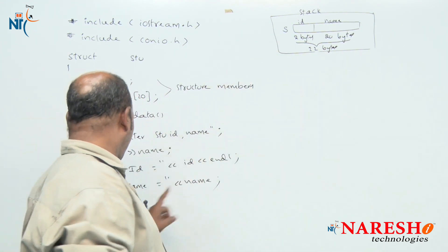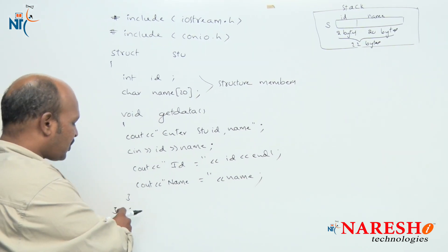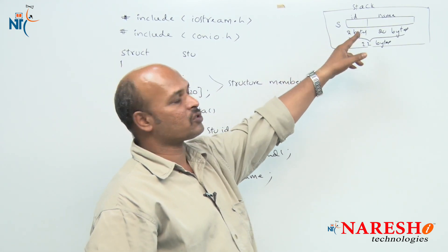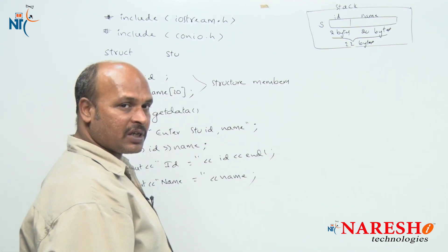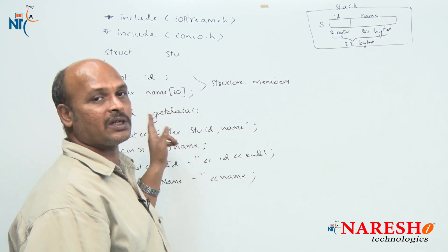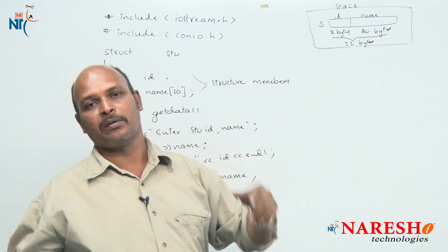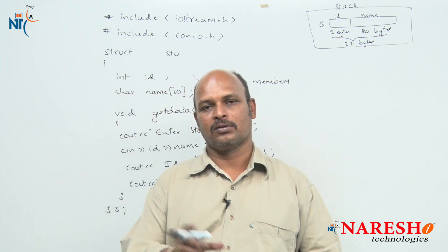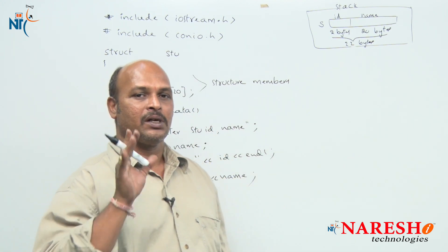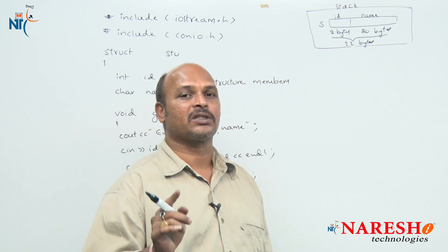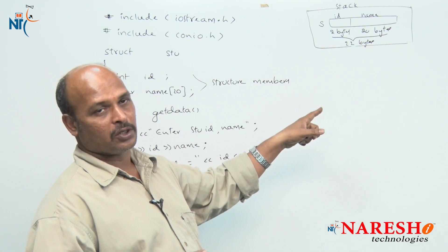An important rule: when the structure variable is declared, memory is allocated for the structure members. Without a structure variable there is no memory, and therefore we cannot access the structure members. That is why if there is a structure there must also be a structure variable.